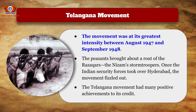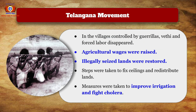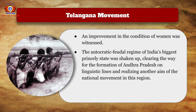The movement was at its greatest intensity between August 1947 and September 1948. The peasants brought about a rout of the Razakars, the Nizam's stormtroopers. Once the Indian security forces took Hyderabad, the movement fizzled out. The Telangana Movement had many positive achievements: in guerrilla-controlled villages, vetti and forced labor disappeared, agricultural wages were raised, illegal land seizures were restored, ceilings were fixed, and lands were redistributed. Irrigation improved, cholera was fought, the condition of women improved, and the autocratic feudal regime of India's biggest princely state was shaken up, clearing the way for the formation of Andhra Pradesh on linguistic lines.